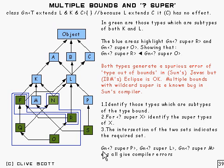And if you look, you'll find that GN of something which is super P, for example, super that, and super L and super M will all give a compiler error because it can tell from these,